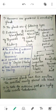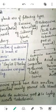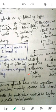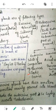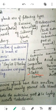Heterocrine glands have both endocrine and exocrine functions. A good example is the pancreas, which acts as a heterocrine gland — it has an endocrine part that secretes hormones and an exocrine part that secretes digestive juices.